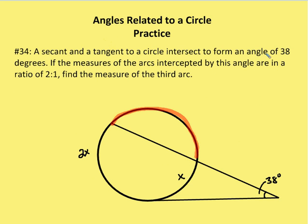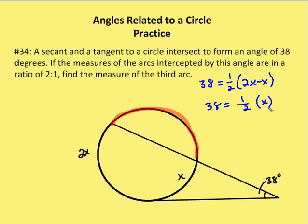A secant and a tangent to a circle intersect to form an angle of 38 degrees. The measures of the arcs intercepted are in a ratio of 2 to 1. For a tangent-secant angle, 38 degrees equals one-half the difference of the two arcs: one-half of (2X - X). So 38 equals one-half of X, meaning X equals 76 degrees. Then the larger arc is 152 degrees and the smaller is 76 degrees. Adding these: 228 degrees. Subtracting from 360 gives 132 degrees as the third arc.